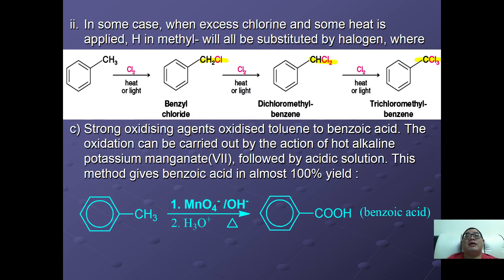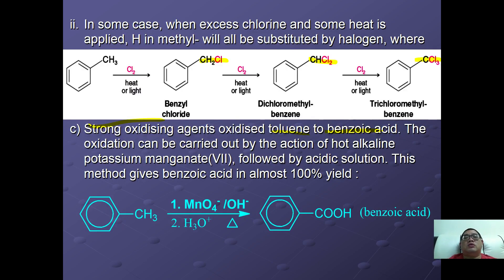One example of a reaction involving benzylic hydrocarbons is oxidation using a strong oxidizing agent. Strong oxidizing agents are able to oxidize toluene to become benzoic acid. The oxidation is carried out using hot alkaline potassium permanganate followed by acidic solution. In the general equation, toluene reacts with alkaline KMnO4 followed by acidic hydrolysis under reflux to yield almost 100% benzoic acid.